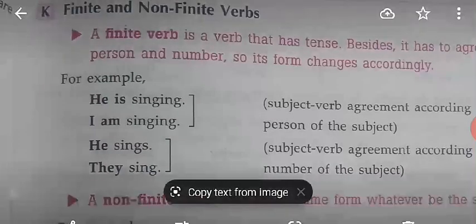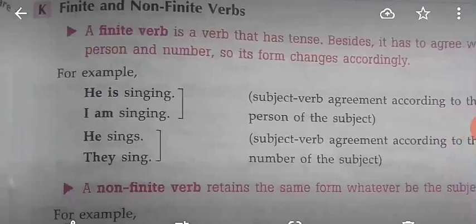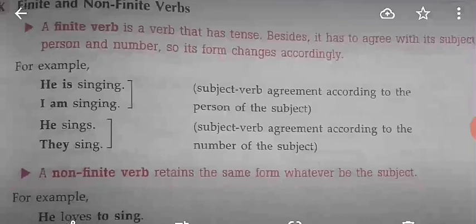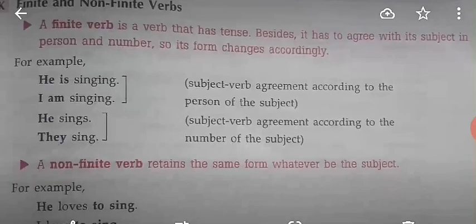Now moving to finite and non-finite verbs. A finite verb is a verb that has tense. Besides having tense, it must agree with its subject in person and number, and its form changes accordingly. Keep in mind: a finite verb has tense and must agree with its subject.